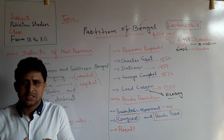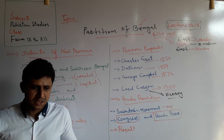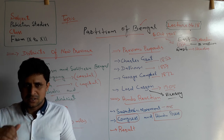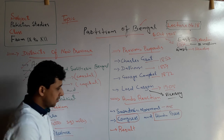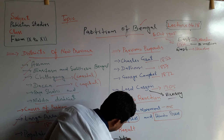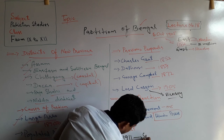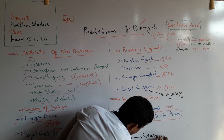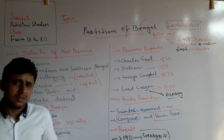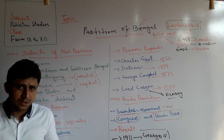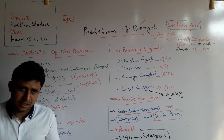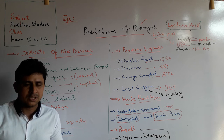Because of the pressure of the Swadeshi Movement, Congress, and the Hindu press, the British government in India decided to cancel the partition of Bengal and make it a single province as before. It was cancelled in 1911 by George V, who was the Emperor of India. He announced the annulment of the partition of Bengal.